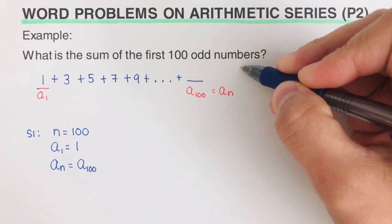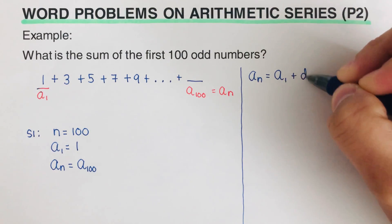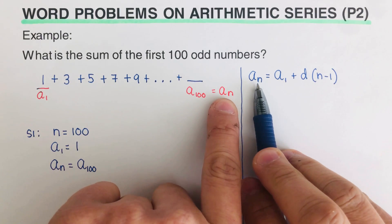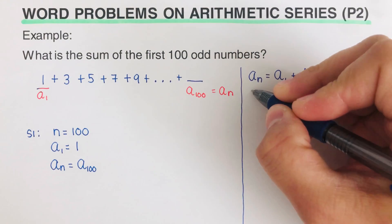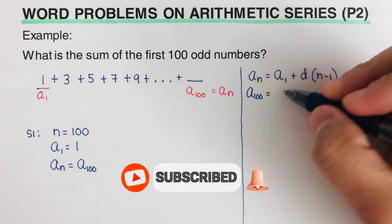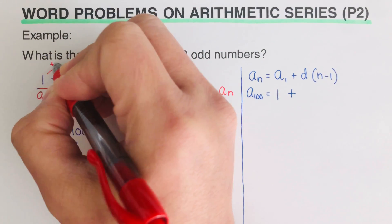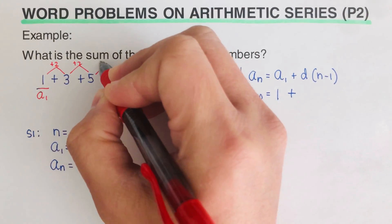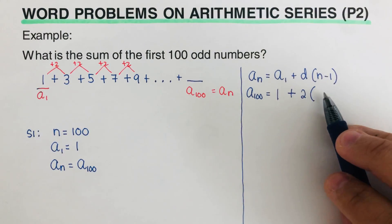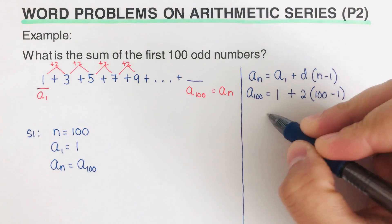To find the 100th term, we use the formula: a sub n = a sub 1 + d(n − 1). Here a sub n is a sub 100, a sub 1 is 1, and the common difference d is 2 — because each term increases by 2. Our n is 100, so we plug in: a₁₀₀ = 1 + 2(100 − 1).